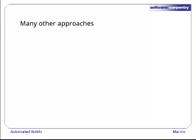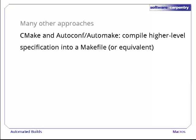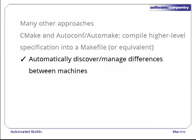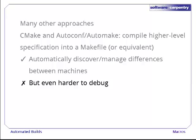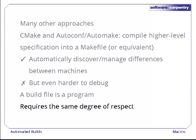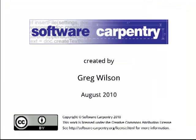There are many other approaches to handling platform dependencies in builds that we won't go into in this lecture. One of the most popular, used by tools like CMake and GNU's autoconf and automake, is to write a higher-level specification for the build that can then be compiled to create makefiles or build files for other tools like integrated development environments. The main benefit is that these tools can manage and even automatically discover the differences between machines so we don't ever have to worry about them. The downside is that these higher-level build files are even harder to debug than makefiles. Remember, a build file is a program — automating tasks with build files can save you endless hours, but you have to treat them with the same respect you would give any other program. In our next episode, we'll have a quick look at how automated builds can be used to support reproducible research.